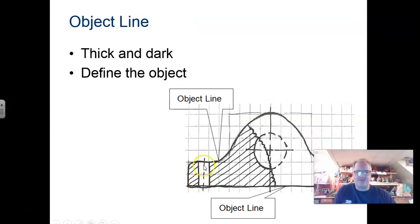Your object lines will always be thick and dark. They, of course, do define the actual object that we are drawing.